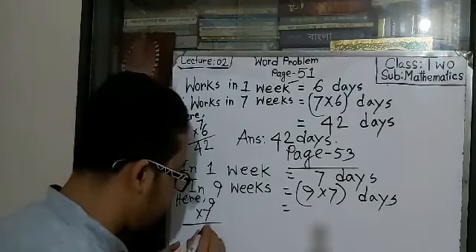Right here, 63. After multiplying, we have got 63 days. That means, there are 63 days in 9 weeks. This is the answer.